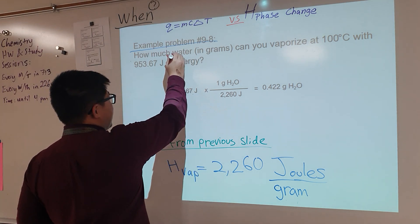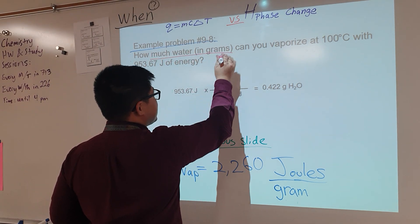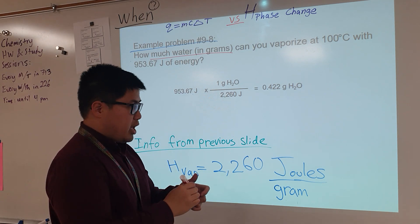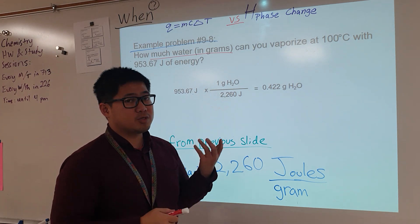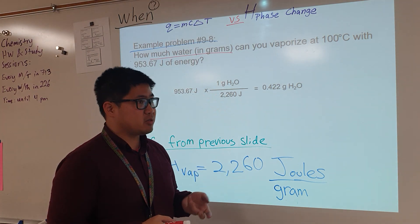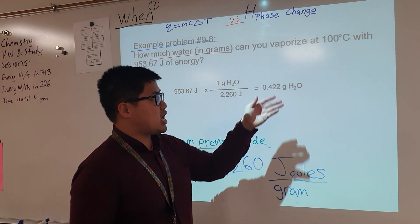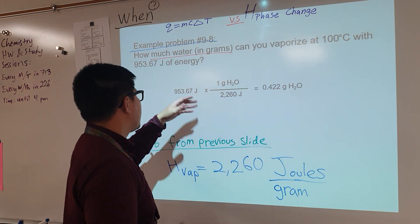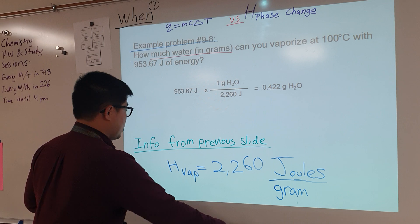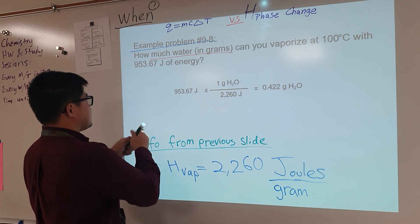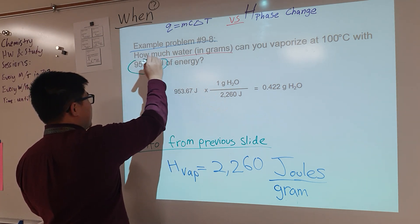We need to find how much water in units of grams. And in order to get there, here's what we're starting off with. We have a couple of things to work with here. We have 100 degrees Celsius, and we have this number here, 953.67 joules of energy.